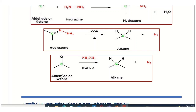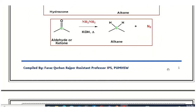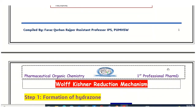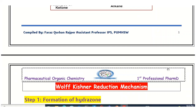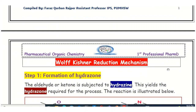The aldehyde or ketone reacts with the hydrazine molecule in the presence of potassium hydroxide and the high-boiling solvent ethylene glycol, and the product obtained is the alkane. Now let's observe the reaction mechanism for the Wolff-Kishner reduction — the different steps and how the chemical changes occur.